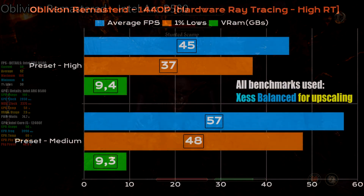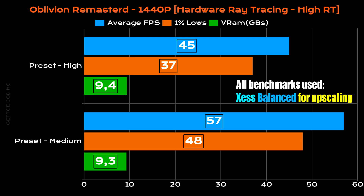Note that you do not need a GPU that supports ray tracing for this game to work — it does support software-based ray tracing. Starting at 1440p with hardware-accelerated ray tracing enabled and the ray tracing preset set to high, with upscaling enabled using XCSS at the balanced preset: for the high graphics preset, the B580 maintained an average FPS of 45, with 1% lows at 37 frames per second, and VRAM usage around 9.4 gigs.